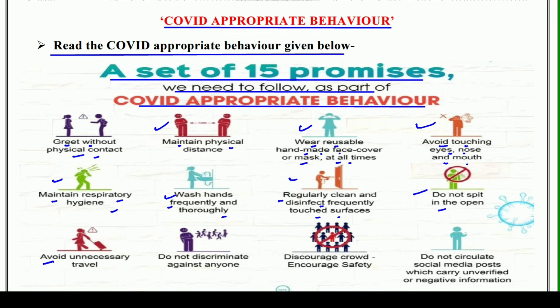Uske baad: avoid unnecessary travel. Jahaan tak ho sake, hume bina zaroorat ke yatra nahi karni. Bahut zaroori ho tabhi hume kahin door jana hai ya paas jana hai. Jab tak zaroori na ho, aap ghar se bahar na nikalein. Phir iske baad hai: do not discriminate against anyone. Yani ki kisi ke saath bhi bhedbhaav na karein — kisi bhi soorat mein kisi ke saath bhedbhaav na karein.